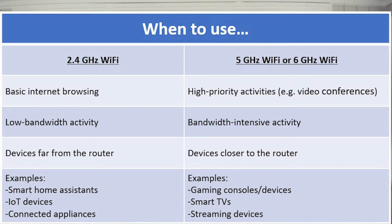All this to say, these situations I've laid out are just ideal scenarios. Can you stream on a 2.4 GHz network? Absolutely. But the bottom line is, if you have a lot of internet users in your home, those higher frequency networks will better support those high bandwidth activities.